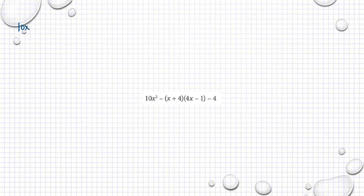So we take 10x² and multiply. Then we have negative X, and then positive 16X, and then negative 4.